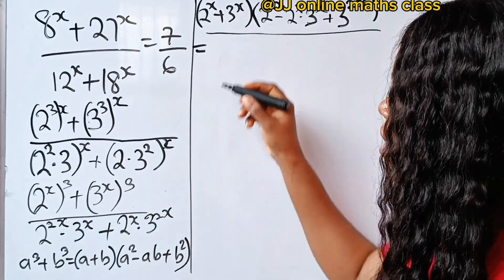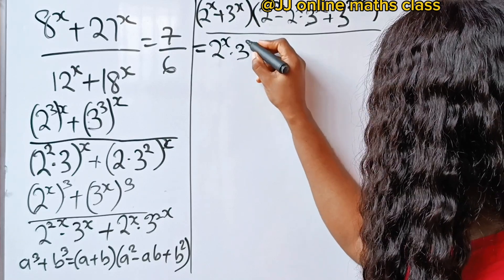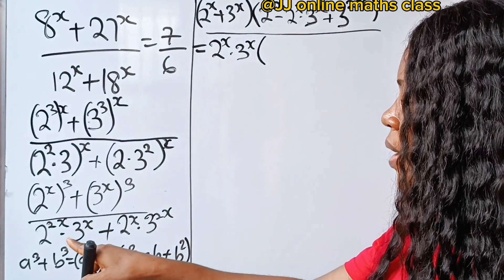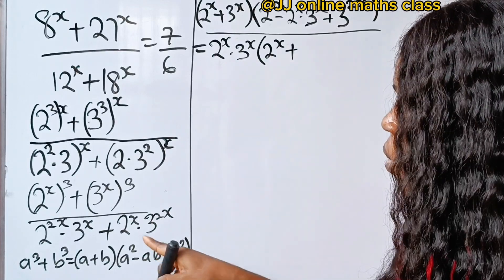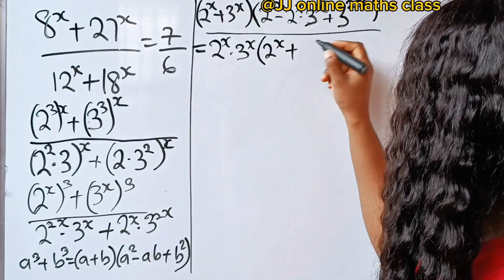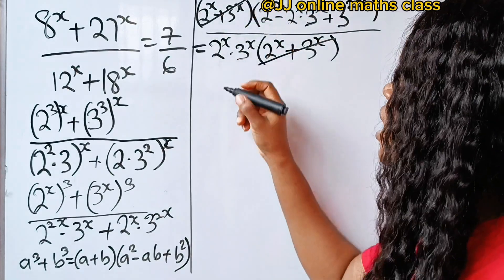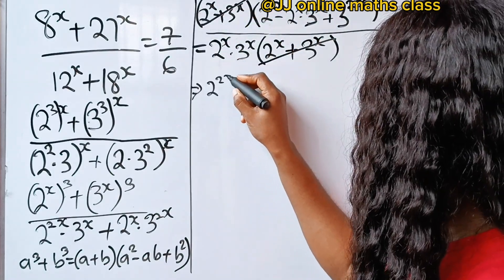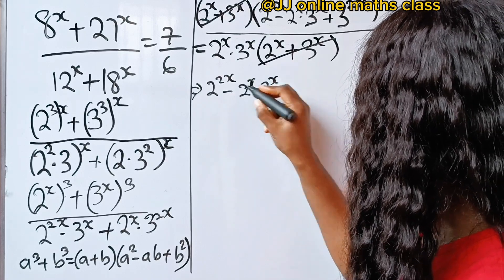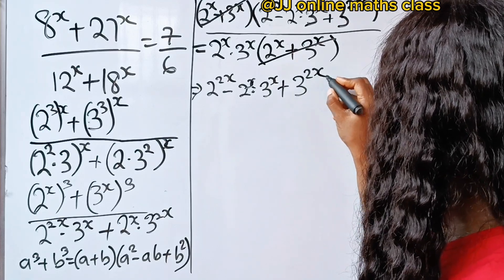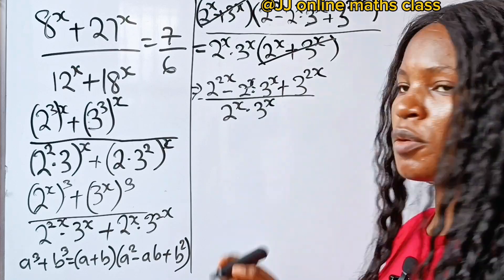Now let's factorize the denominator. The denominator has 2^x multiplied by 3^x as a common factor. When we divide the numerator bracket (2^x + 3^x) by this, we see it cancels. We are left with 2^(2x) minus 2^x · 3^x plus 3^(2x), all divided by 2^x multiplied by 3^x.